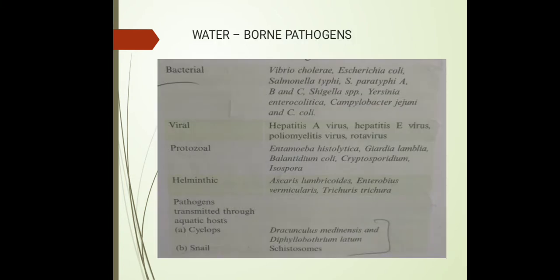Waterborne pathogens that can cause disease include: bacterial pathogens such as Vibrio cholerae, Escherichia coli, and Salmonella typhi; viral pathogens including Hepatitis A virus, Hepatitis E virus, poliovirus, and rotavirus; protozoal or parasitic pathogens such as Entamoeba histolytica, Giardia lamblia, Balantidium coli, Cryptosporidium, and Isospora; and helminthic pathogens including Ascaris lumbricoides, Enterobius vermicularis, and Trichuris trichiura.